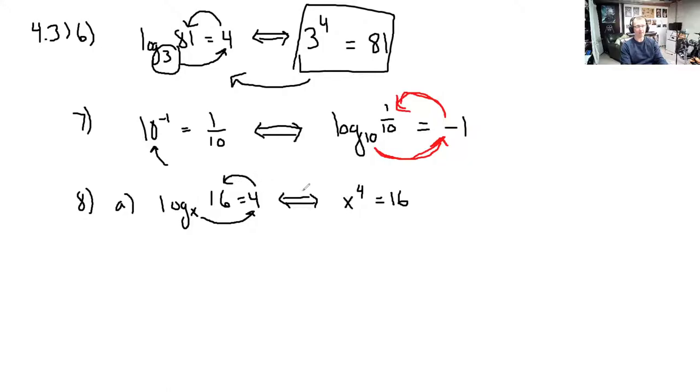So x to the fourth is 16. x to the fourth is 16. That's the equivalent exponential form. And this is absolutely fine. This I can sort of figure out. I know my powers of things pretty well. So this means that 2 is x. 2 to the fourth, right? 2 times 2 times 2 times 2 is 16. Okay, so I think that's number 8 there.